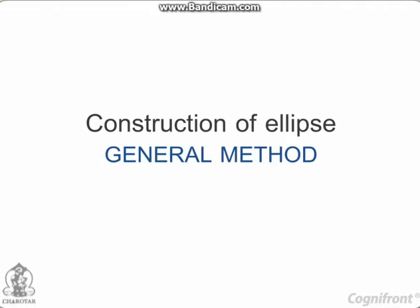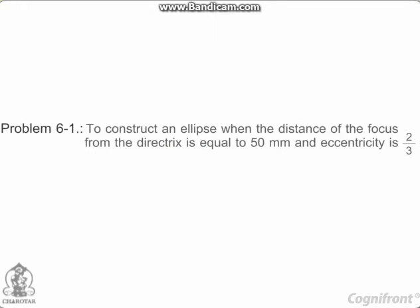General method of construction of an ellipse. Problem 6.1: To construct an ellipse when the distance of the focus from the directrix is equal to 50 mm and eccentricity is 2 by 3.